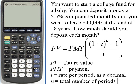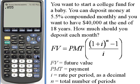Let's start by figuring out what i is — the rate per period as a decimal. The rate per year is 5.5%, which as a decimal is 0.055. To find the rate per period, we divide that by 12. Now that I have the rate per period, I want to add 1 to it to get 1 plus i.